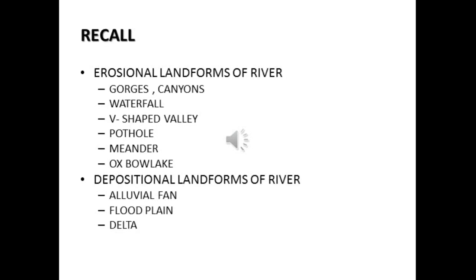The erosional landforms of rivers were waterfall, V-shaped valley, pothole, meander and oxbow lake. The depositional landforms of rivers were alluvial fan, flood plain and delta. The erosional landforms were seen in the upper and middle course of the river, whereas the depositional landforms of river were seen in the lower course of the river.